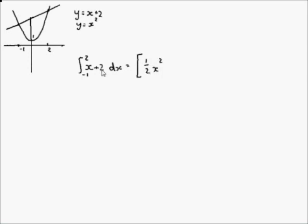Basically, raise the power by 1 and multiply by 1 over the new power — that's a half. Then plus 2x.